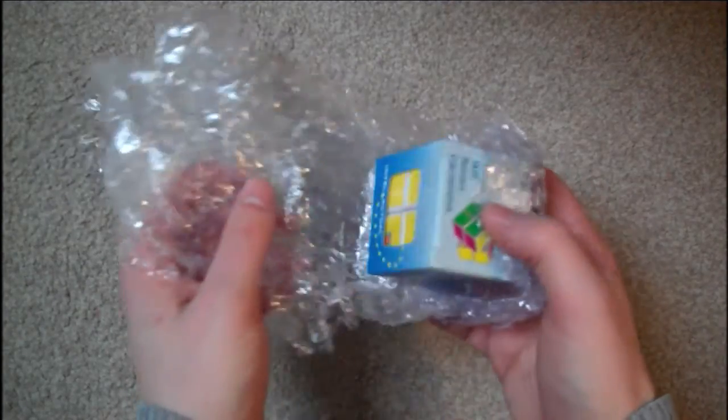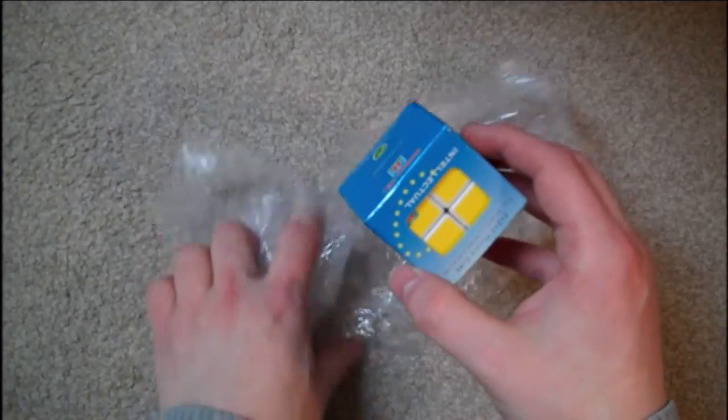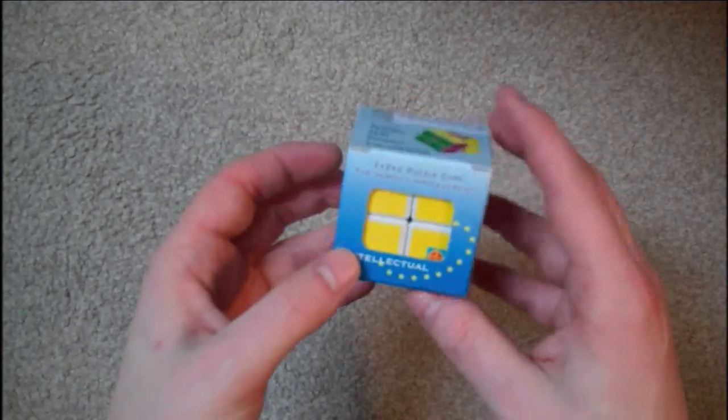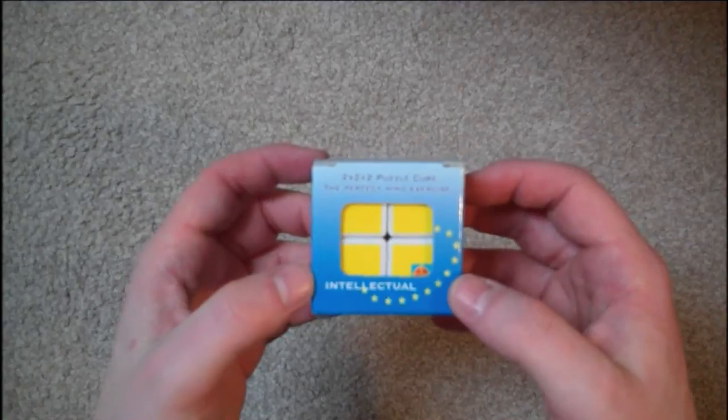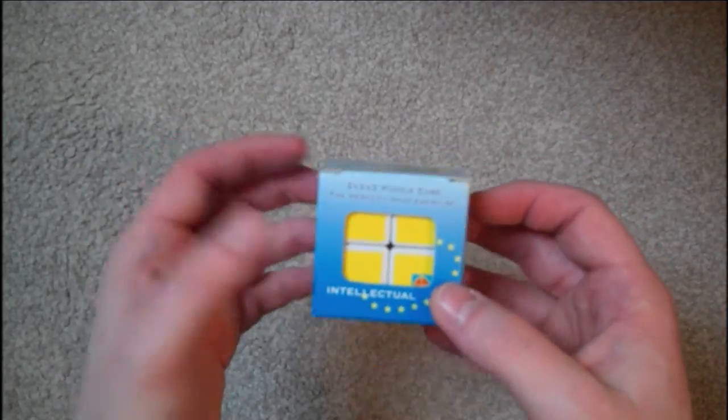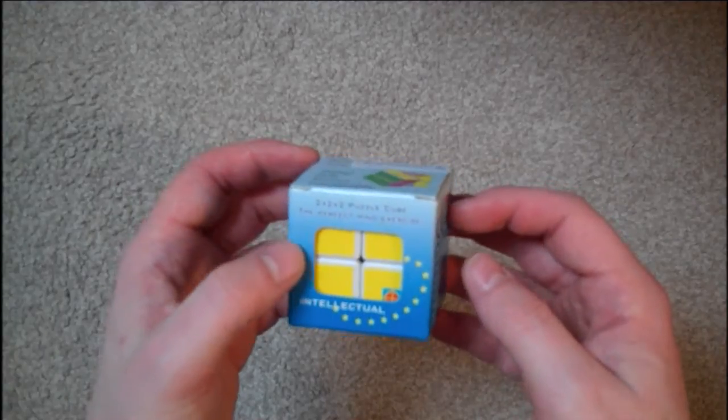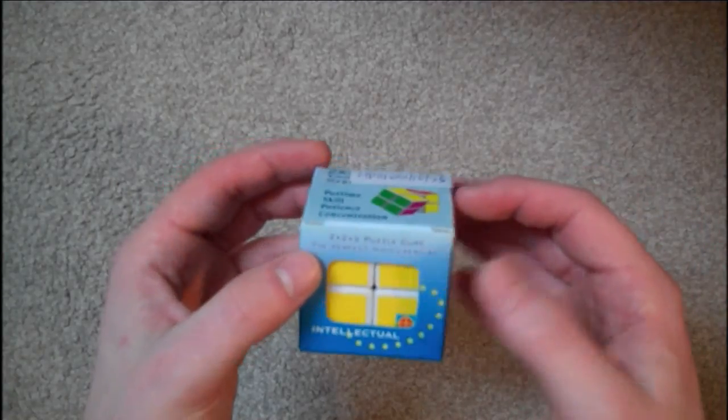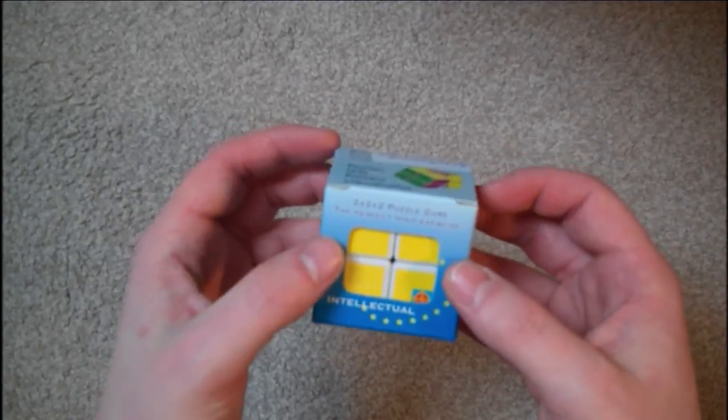Ah, this is... I wasn't really expecting this. This is the East Sheen 2x2. I ordered this about two weeks ago from Amazon from someone in the UK, and because I hadn't received it, you know, because I've been waiting for two weeks, I thought it may not ever come.